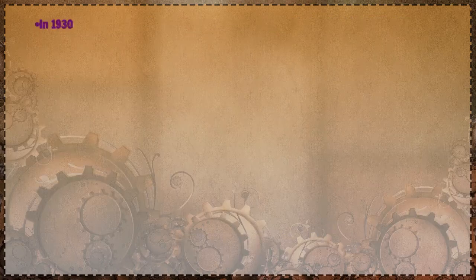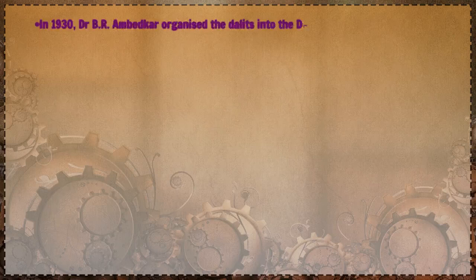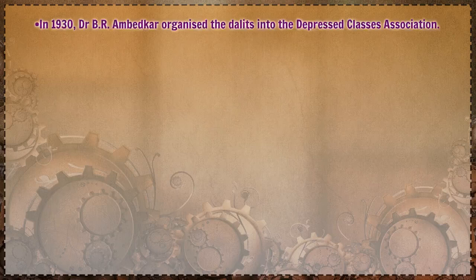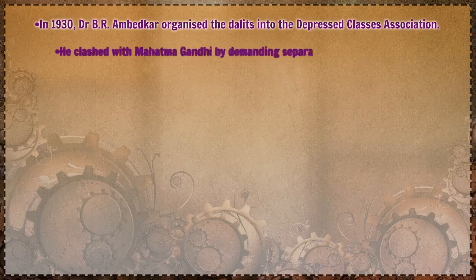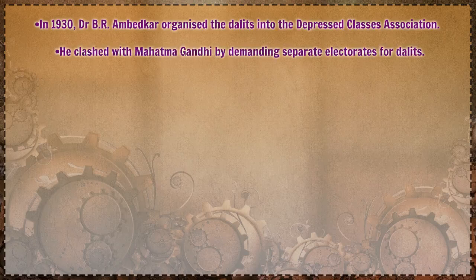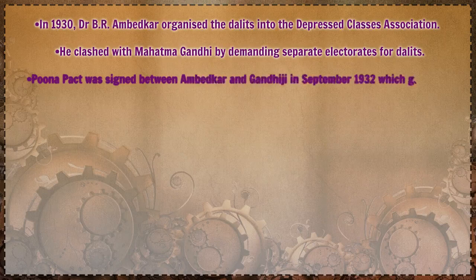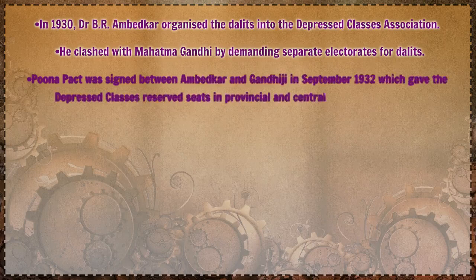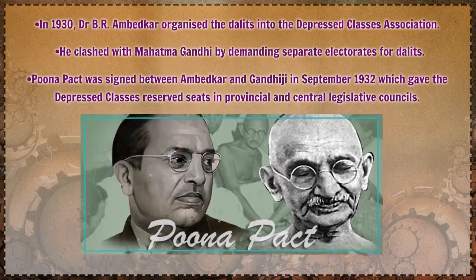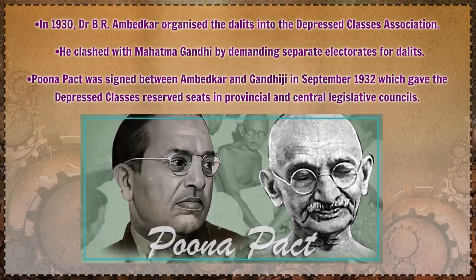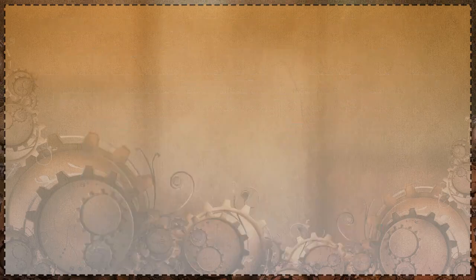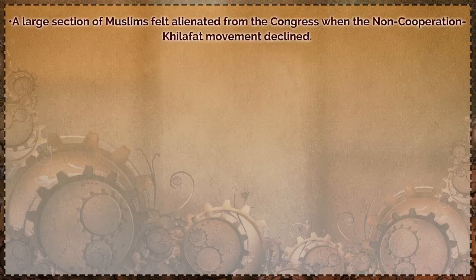He called the untouchables Harijan and organized Satyagraha to secure them entry into temples and access to public wells, tanks, roads, and schools. In 1930, Dr. B. R. Ambedkar organized the Dalits into the Depressed Classes Association. He clashed with Mahatma Gandhi at the Second Round Table Conference by demanding separate electorates for Dalits. Gandhiji began a fast unto death because he believed this would disunite the Indian masses. Ultimately, the Poona Pact was signed between Ambedkar and Gandhiji in September 1932, which gave the depressed classes reserved seats in provincial and central legislative councils, but they were to be voted in by the general electorate.